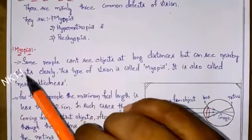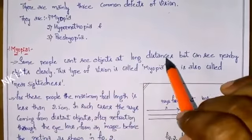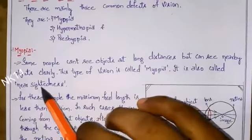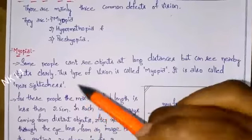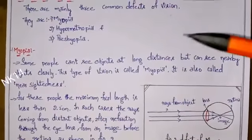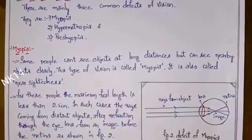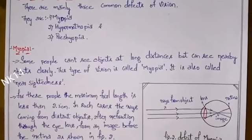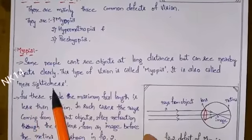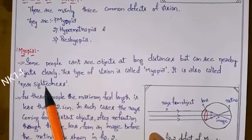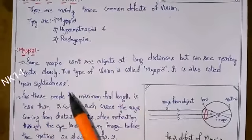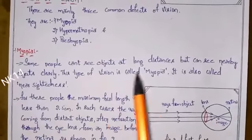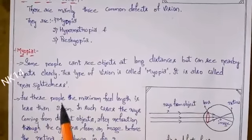The first defect is myopia, also called nearsightedness. Some people can't see objects at long distance but can see nearby objects clearly. Persons who can see objects at near distance but cannot see objects at far distance have myopia. Since they can see near objects, it is called nearsightedness — don't get confused between nearsightedness and farsightedness.